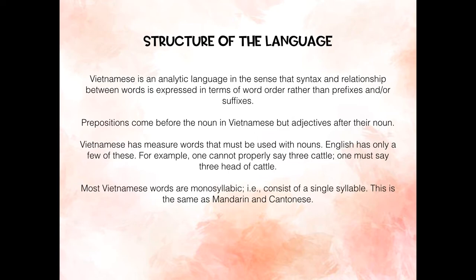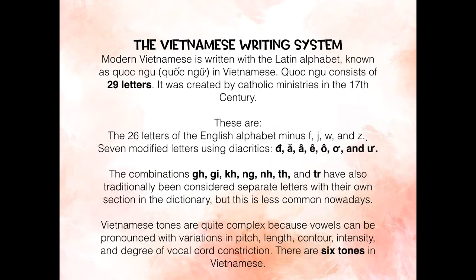Most Vietnamese words are monosyllabic — for example, they consist of a single syllable. This is the same as Mandarin and Cantonese. Modern Vietnamese is written with the Latin alphabet known as Quốc Ngữ in Vietnamese. Quốc Ngữ consists of 29 letters. It was created by Catholic missionaries in the 17th century.